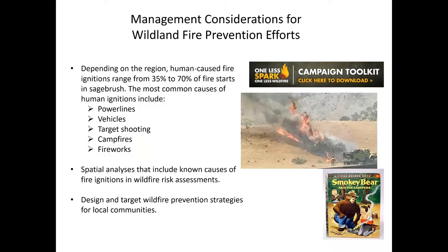Depending on the region, human-caused fire ignitions can range anywhere from 35 to 70 percent of all fire starts in sagebrush communities. The most common causes of these human ignitions include power lines, vehicles, target shooting, campfires, and fireworks. We would recommend additional spatial analyses that include known causes of fire ignitions in wildfire risk assessments, as this type of information can help design and target wildfire prevention strategies for many different local communities.